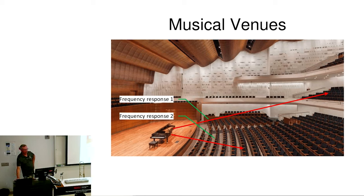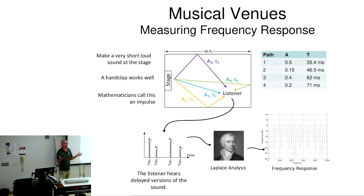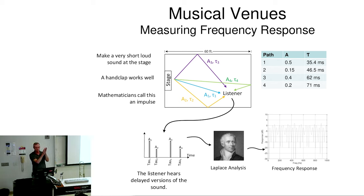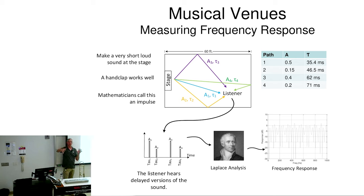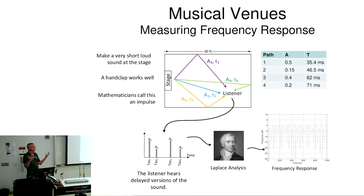If you're in a venue like this, the person up near the stage has a little bit different frequency response than the person in the back — every seat is different. The simplest way to measure frequency response would be: play a sine wave at one frequency, see how loud it is, play it at another frequency, see how loud that is, and eventually you get all the frequencies and a frequency response plot. But that only tells half the story — you get the absolute value of the frequency response but not the phase.